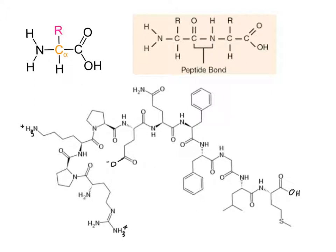In any polypeptide chain — often referred to as a protein once folded — you're going to have the N-terminus and the C-terminus. The N-terminus is the end of the polypeptide chain that has the amine group, and the C-terminus is the end that has the carboxyl terminus. You can have any number, up to hundreds, of amino acids linked in between.